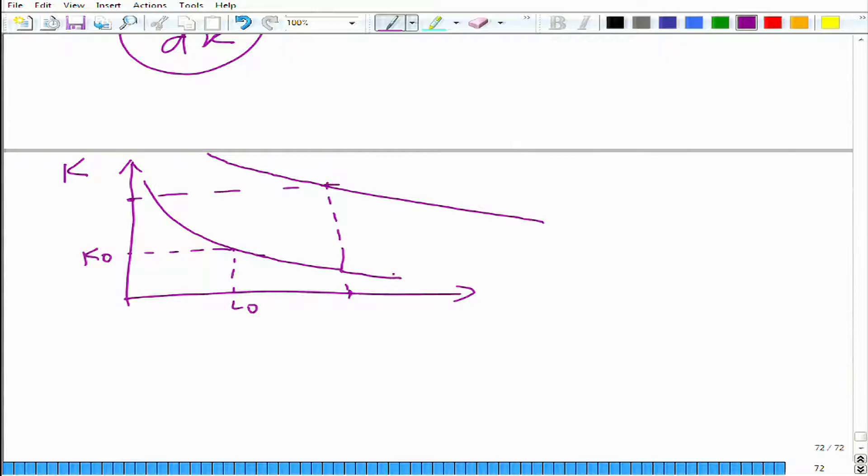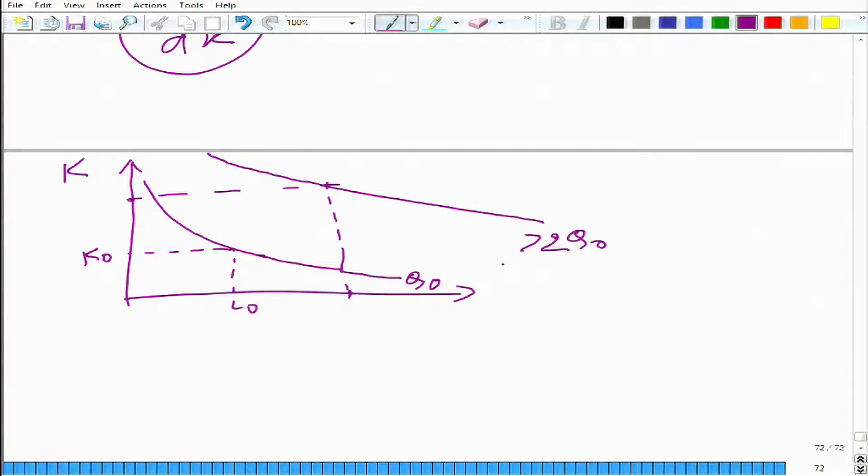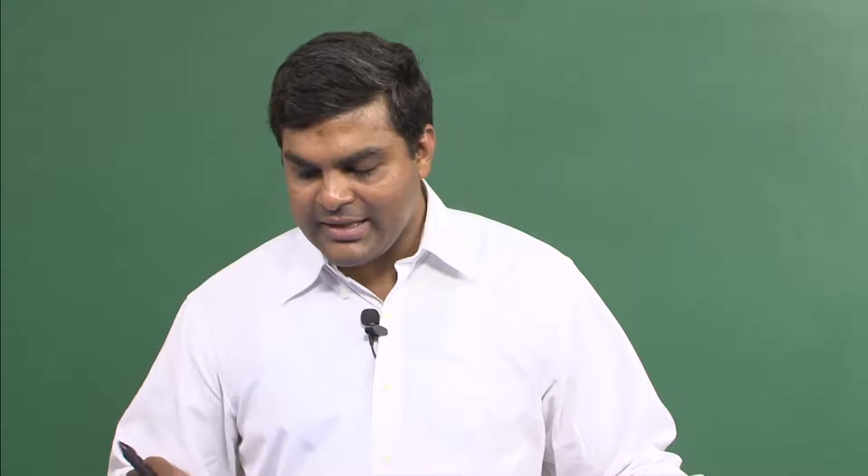If it is constant return to scale, this is q₀, then we are going to get 2q₀. If it is increasing return to scale, we will get greater than 2q₀, and if it is decreasing return to scale, it will be less than 2q₀.